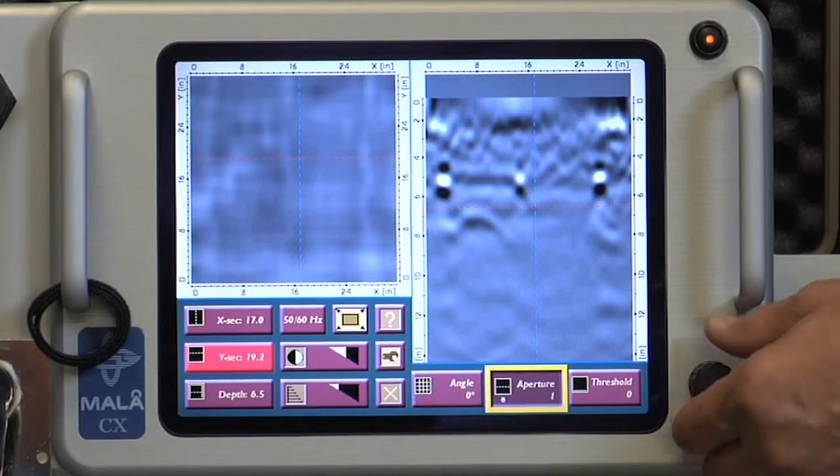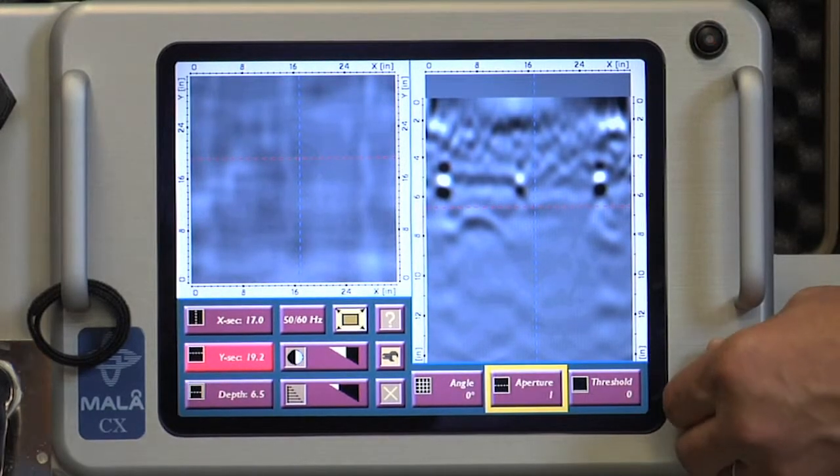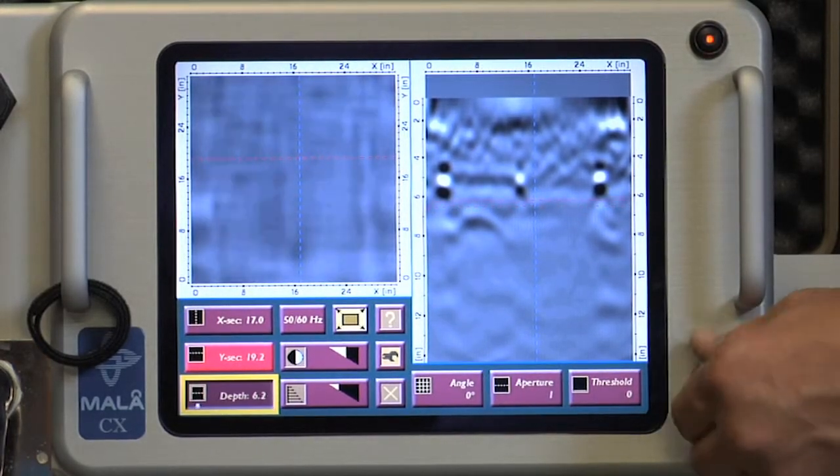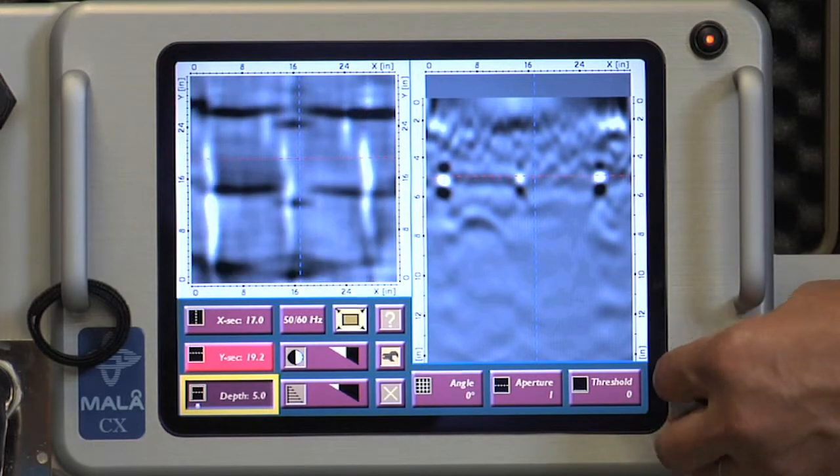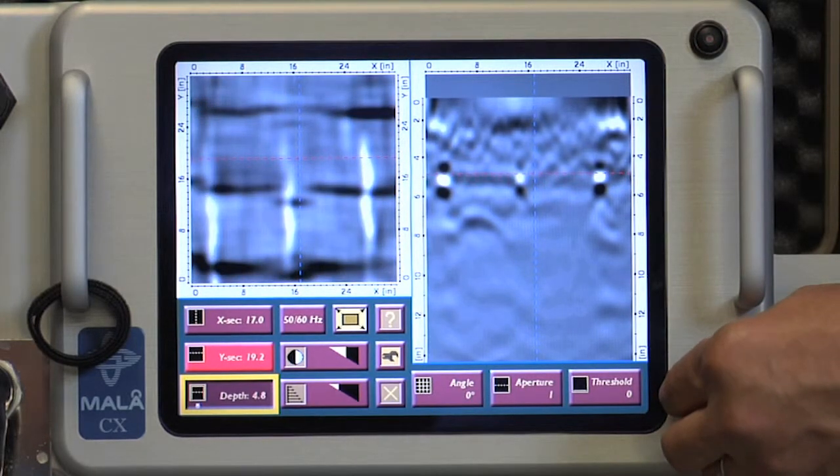Aperture: The aperture feature allows control of the thickness of the data slice depicted on the plan view. As the aperture value increases, the horizontal cursor becomes wider.